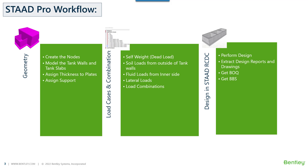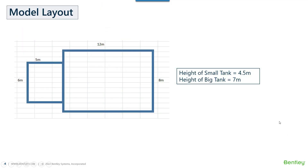Let us get into the actual demonstration. Before going to the STAAD environment, we will quickly have a look at what our tank will look like. We will create a model of a combination of two tanks. The bigger tank has dimensions of 12 meters by 8 meters, and the smaller tank is combined with it — the wall between them is a common shared wall. This tank will be an open tank stopping at a height of 4.5 meters, whereas the other tank will continue up to 7 meters with an enclosed top slab.